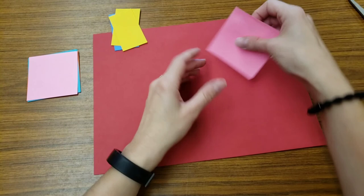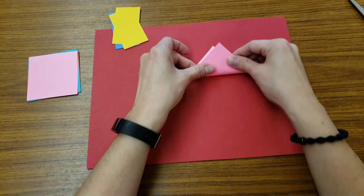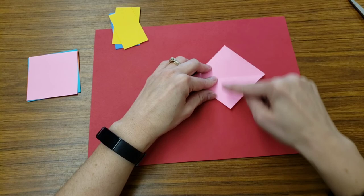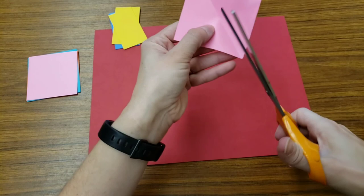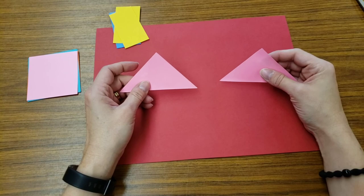If I take this piece, right now it's a square. If I turn it, it's a diamond. I'm going to fold it so my corners are touching. That made a triangle. If I open it and cut on the line, now I have two triangles.